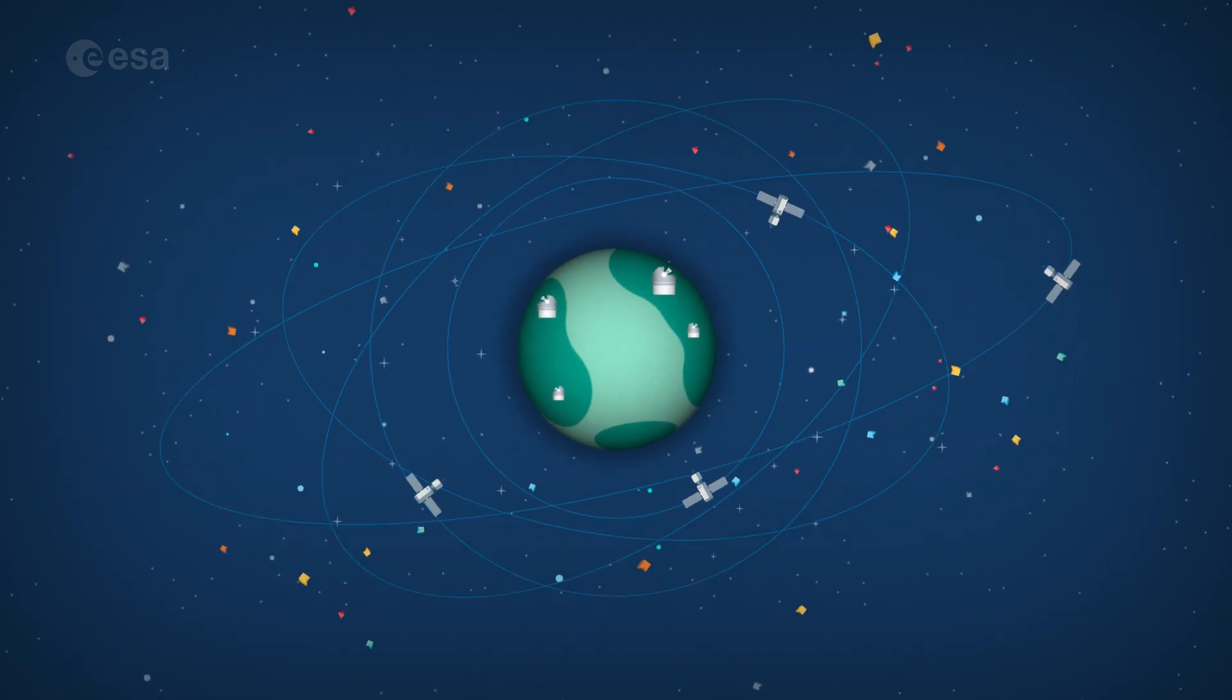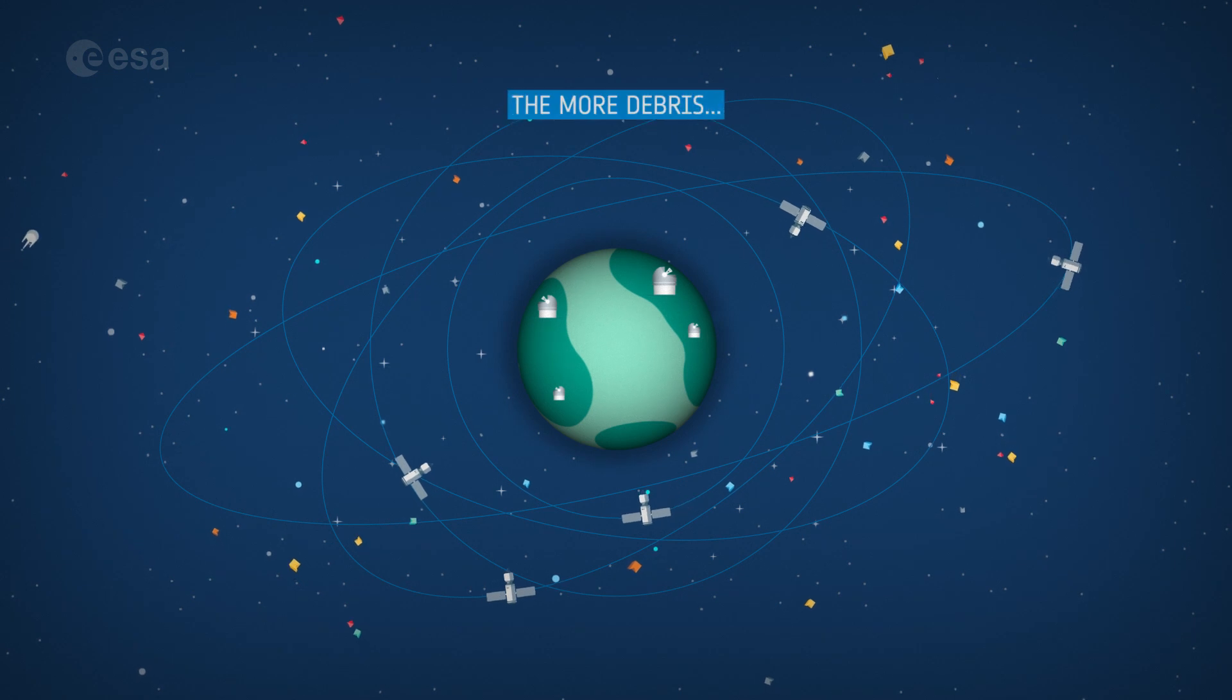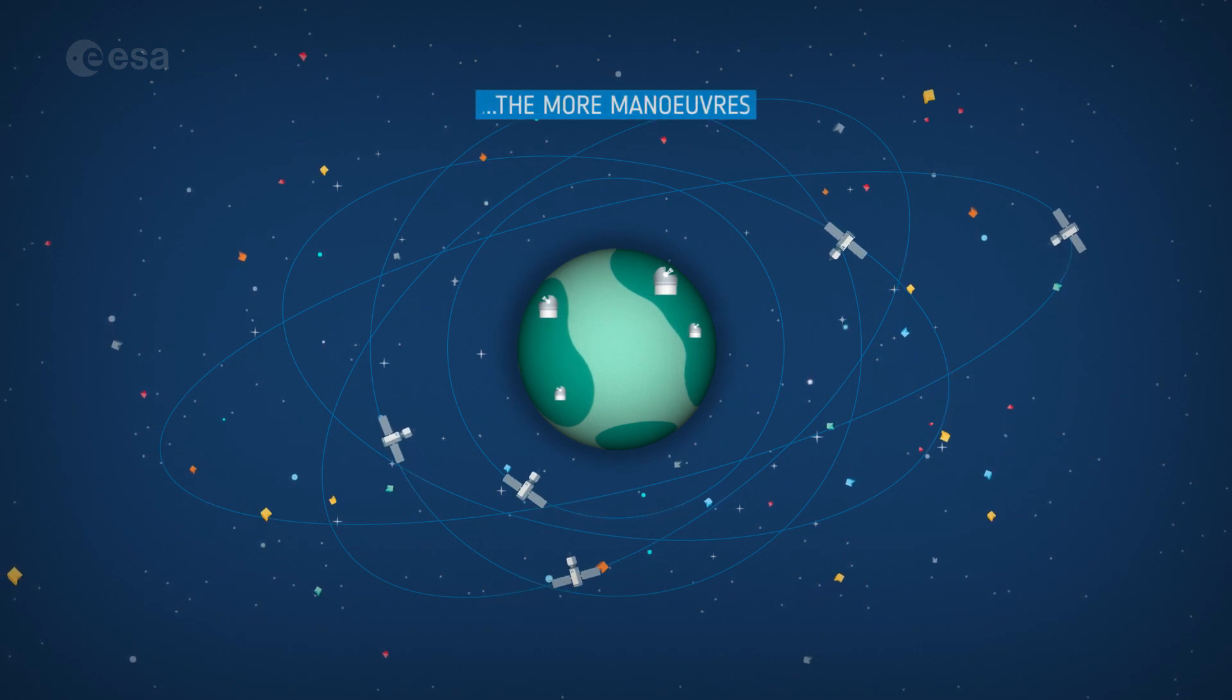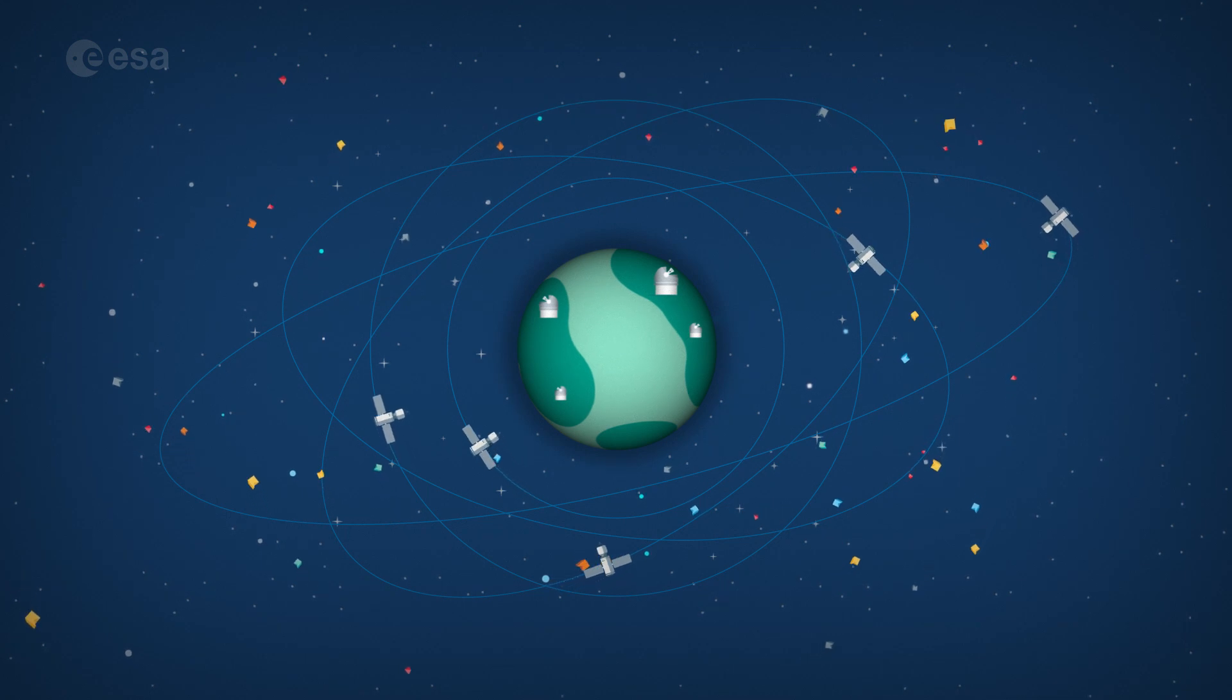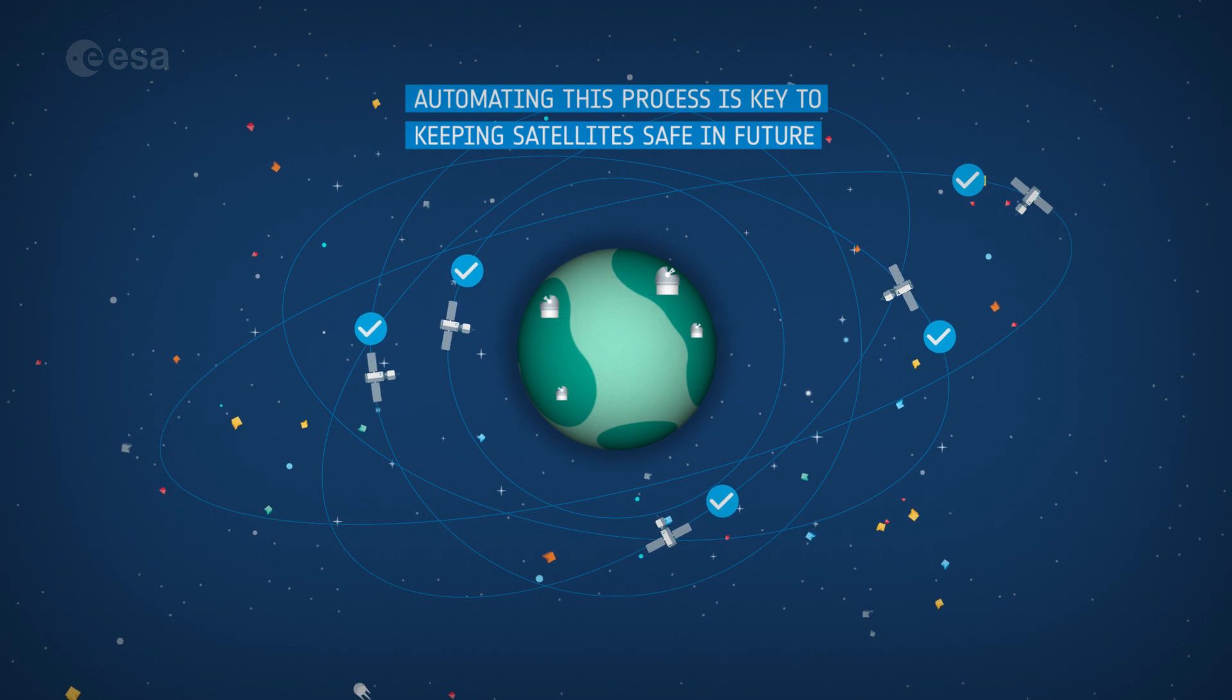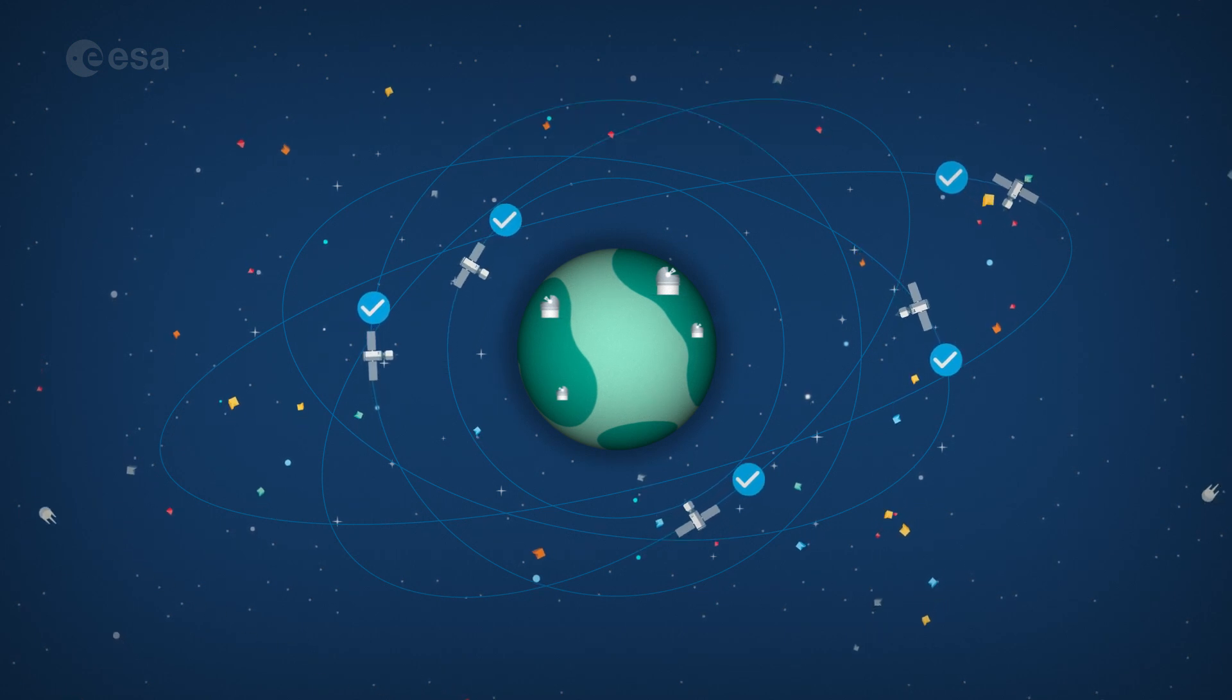As human activity in space increases, it will no longer be possible to plan every collision avoidance manoeuvre by hand. ESA is working to safeguard crucial space-based satellites and services by automating the collision avoidance process.